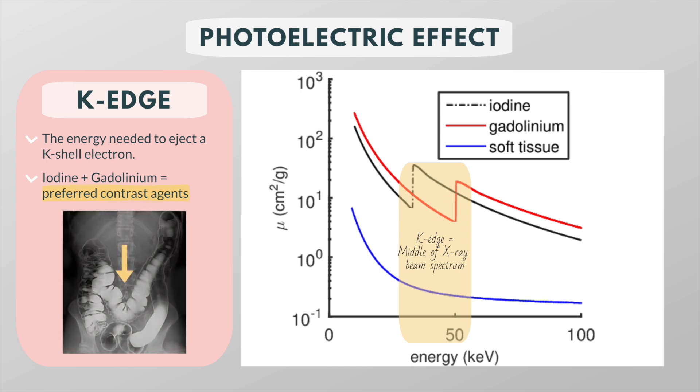This is why tissues with even small amounts of iodine will have a much stronger x-ray stopping power than those without iodine. Also, they both have high atomic numbers, and the higher the atomic number, the more photoelectric absorption that will occur.